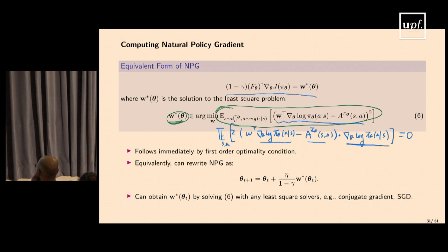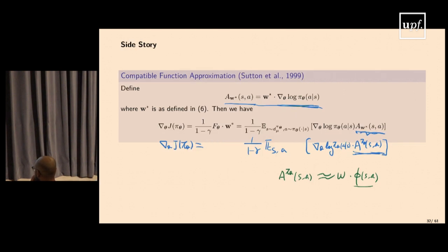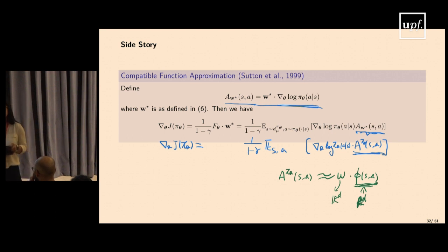Q&A: Policy gradient methods are often used for continuous action spaces. Does the feature map φ(s,a) become infinite-dimensional? No — φ(s,a) is just a vector in ℝ^d for any state and action, and w is also in ℝ^d. You can construct finite-dimensional feature maps for continuous action spaces.